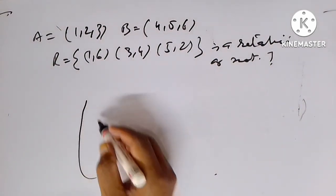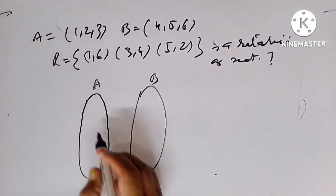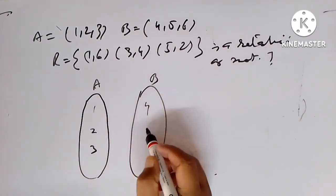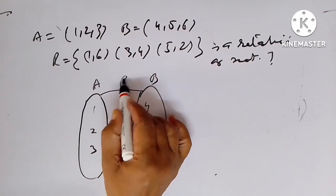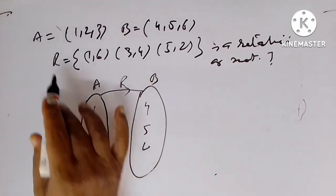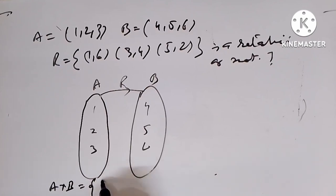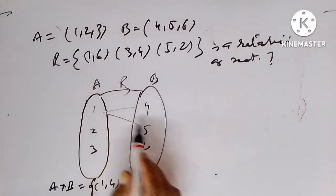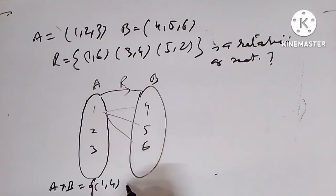We have to understand it by drawing a Venn diagram. Let A and B be two given sets containing 1, 2, 3 and 4, 5, 6. If R is a relation, it must be a subset of A cross B, so we find A cross B first. A cross B is {(1,4), (1,5), (1,6), (2,4), (2,5), (2,6), (3,4), (3,5), (3,6)}.